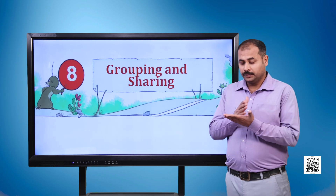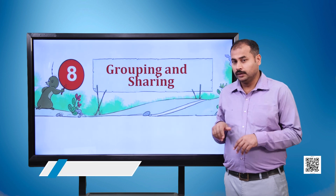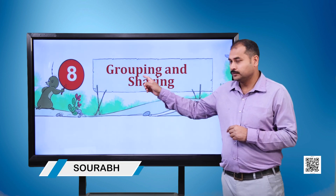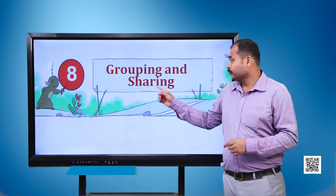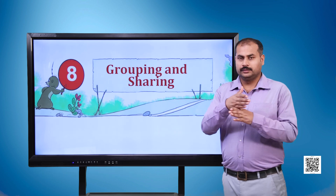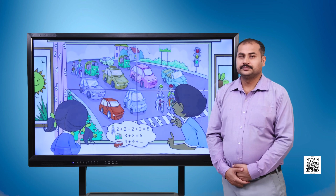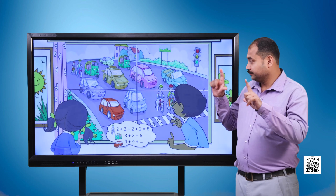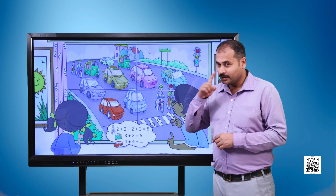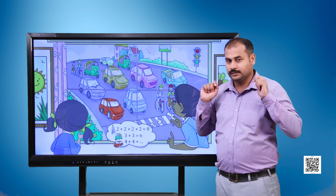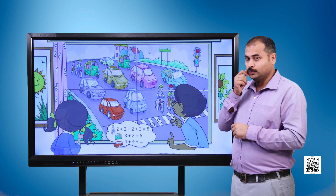Chapter 8: Grouping and Sharing. We have an image for you. In the image we can see two kids looking out of their window. They are counting the number of wheels on each vehicle.